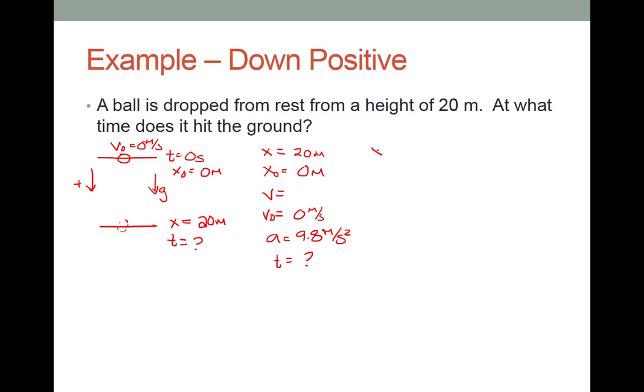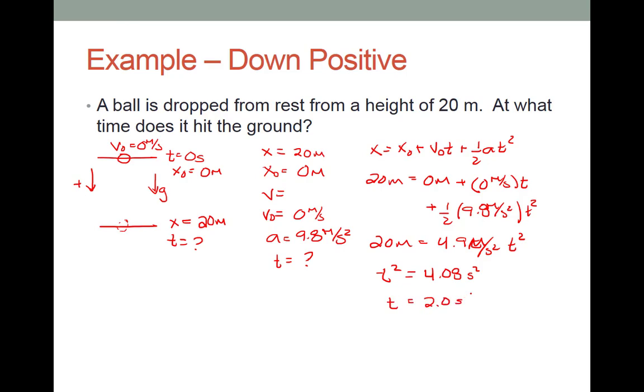And just like last time, I am going to use the exact same formula. Plugging in numbers, I get 20 meters equals 0 meters plus 0 meters per second times t plus 1 half times 9.8 meters per second squared t squared. Which gives me that 20 meters equals 4.9 meters per second squared t squared. And now if you look, the left and right hand sides are flipped. But I have the exact same equation I had the first time I worked this problem. So I get t squared equals 4.08 seconds squared, which means t equals 2.0 seconds for all intents and purposes.